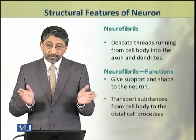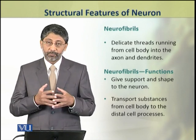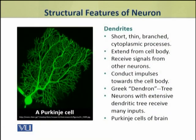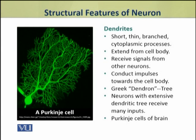The dendrites are short, thin and branched cytoplasmic processes. They extend from the cell body and receive signals from other neurons, and after receiving these signals, they send these signals to the cell body. The word dendrite comes from the Greek word dendron, which means tree, because dendrites are very branched — hence the name dendritic tree. Highly branched dendritic trees of nerve cells are found in the Purkinje cells of the cerebellum.